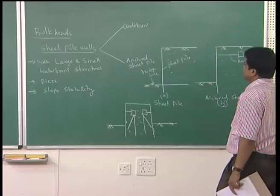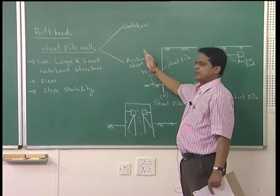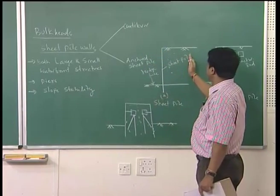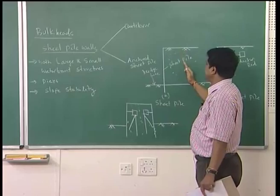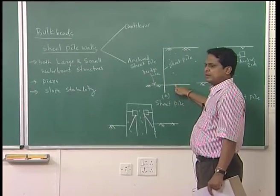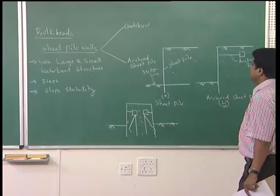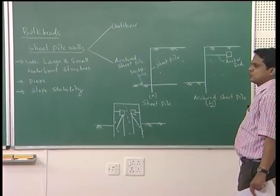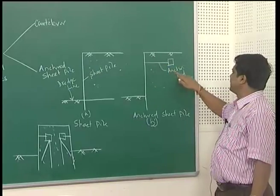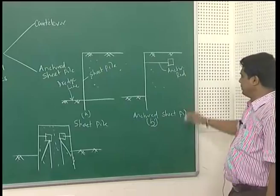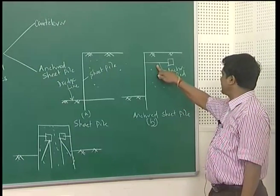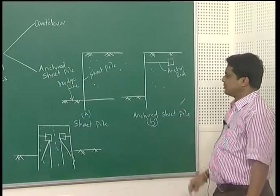The first case is only a sheet pile where one end may face water and the other end retains the soil mass. This line is called the dredge line. If the sheet pile is large, to prevent against the bending movement, one end has been connected by means of an anchor rod — that is why it is called an anchored sheet pile.